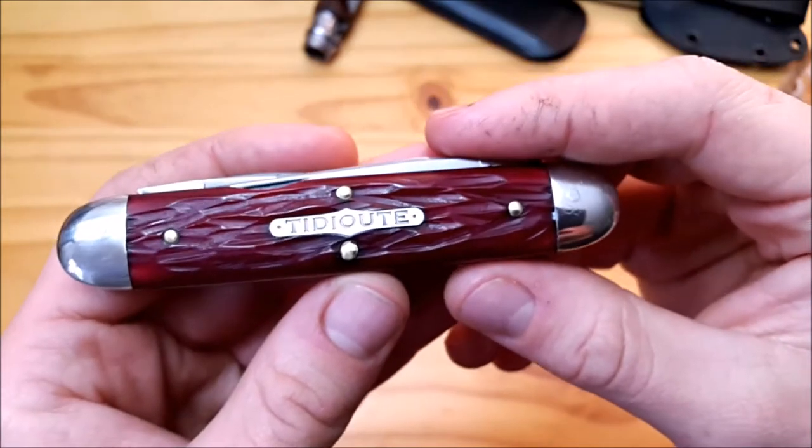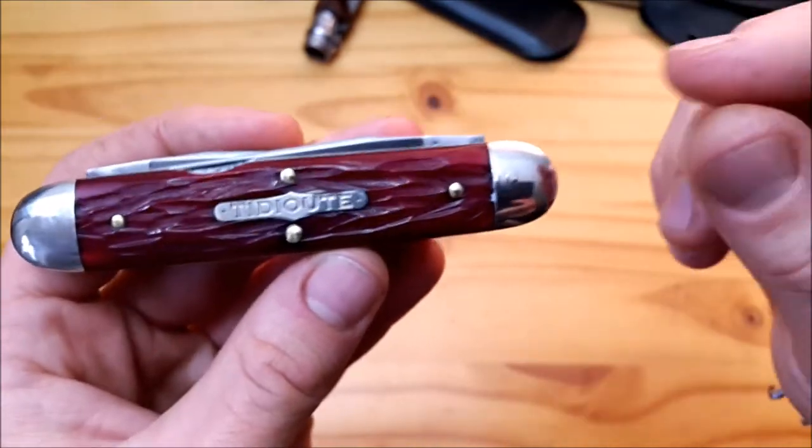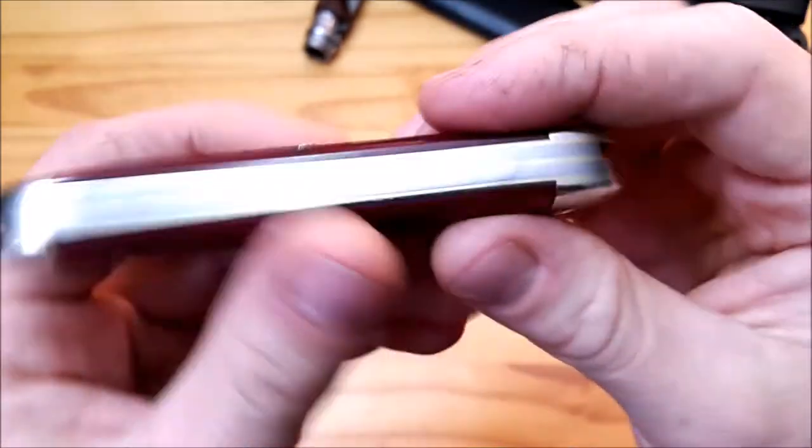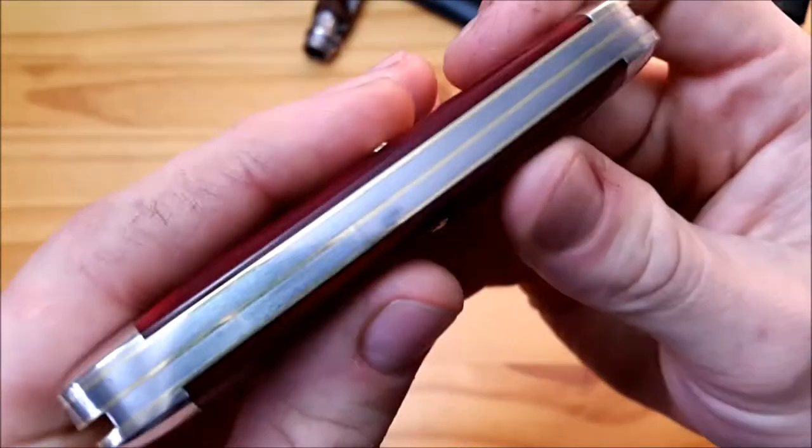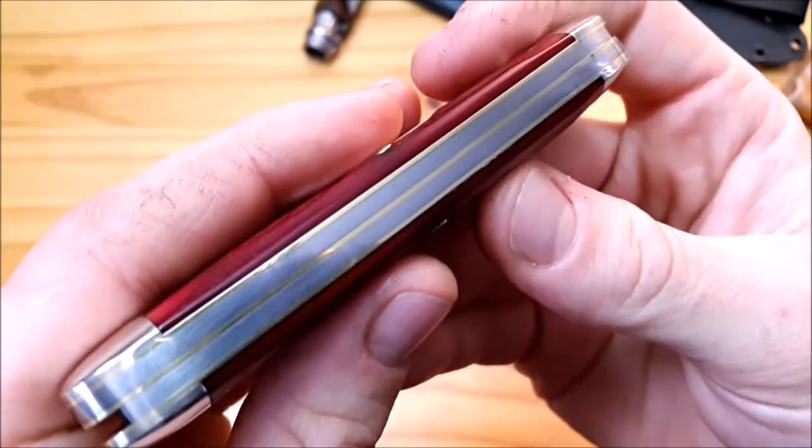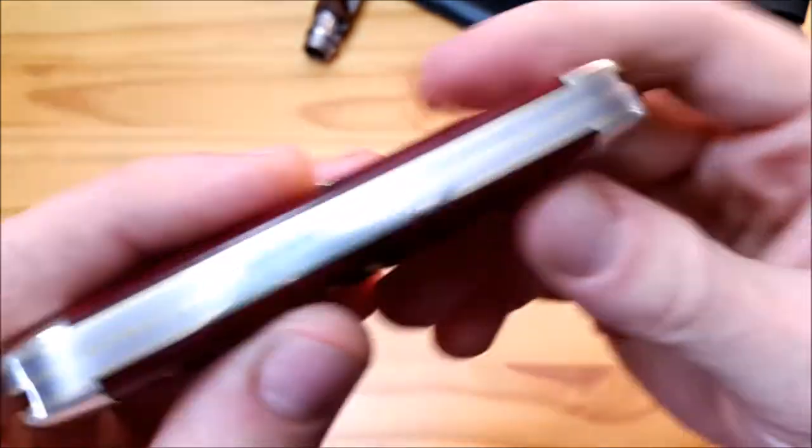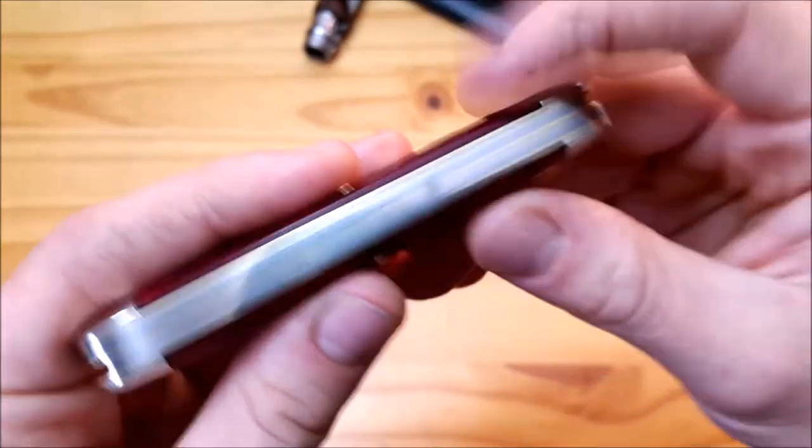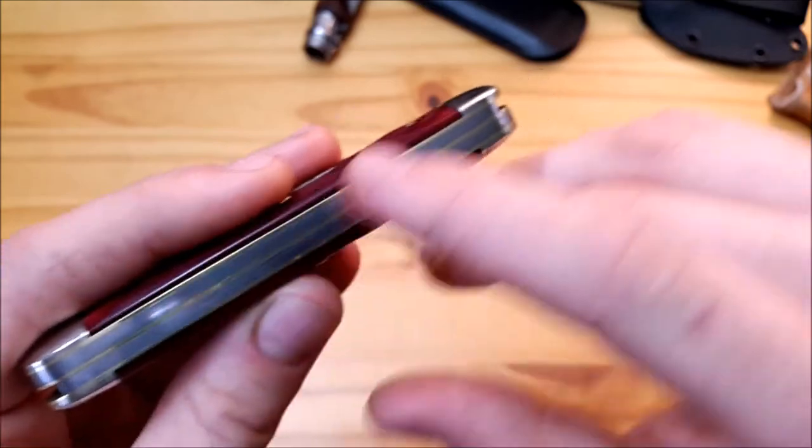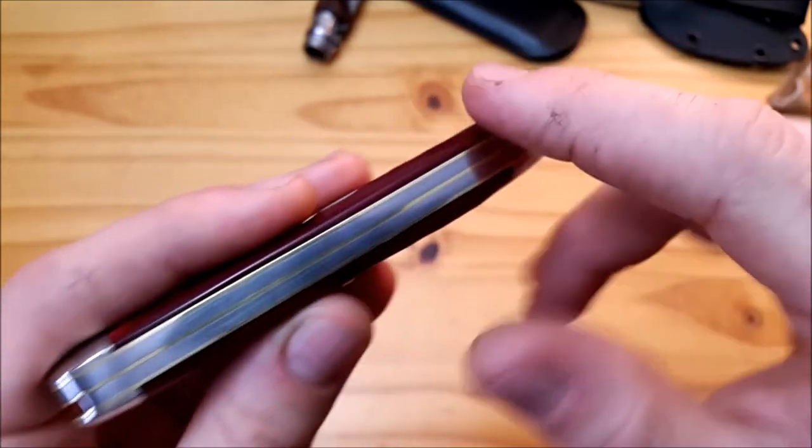Manufacturing on this knife is pretty damn excellent. If you look at the back springs and the liners, there are no gaps. I can't find any. I'd shine the light through it, but my light just broke. I can tell you there are no gaps nowhere, from front to back this is completely tight.